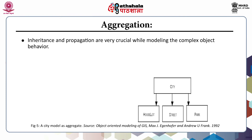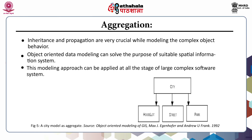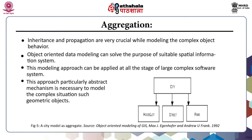Inheritance and propagation are very crucial while modeling complex object behavior. Object-oriented data modeling can solve the purpose of a suitable spatial information system. This modeling approach can be applied at all stages of a large complex software system. This approach, particularly the abstract mechanism, is necessary to model complex situations such as geometric objects. In the left panel, we can see a city model as an aggregate.